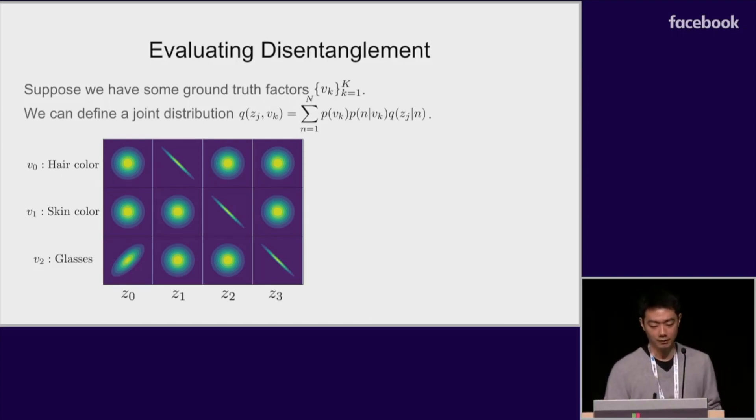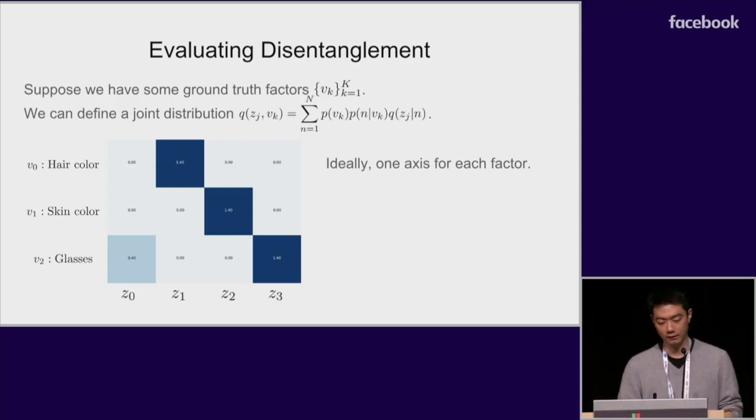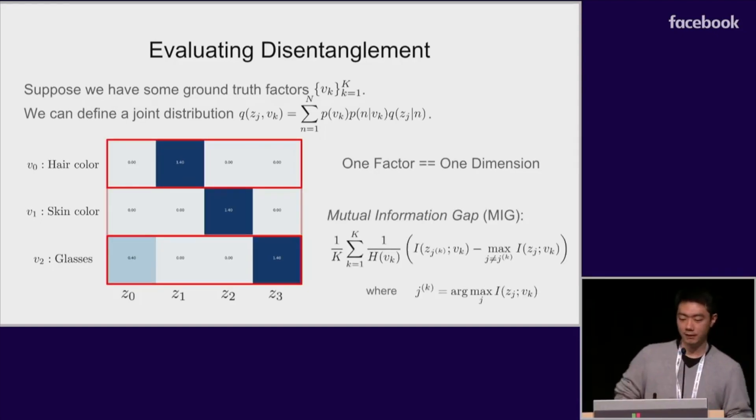Suppose we have some ground truth factors V that we want the algorithm to recover. We can then define a joint distribution over the factors and latent variables again using our encoder q. Now the most ideal representation is one in which each factor is only reflected in exactly one dimension of the latent variable. So we can use this joint distribution and estimate the mutual information between every factor and latent dimension. Then for each factor, we can sort the latent variables based on how much information they contain about that factor. And then simply take the difference between the top two values and then normalize this to be between 0 and 1. So essentially, this metric is high if there is exactly one dimension that corresponds to each factor while all other dimensions are independent. This is the main motivation behind our disentanglement metric, MIG.